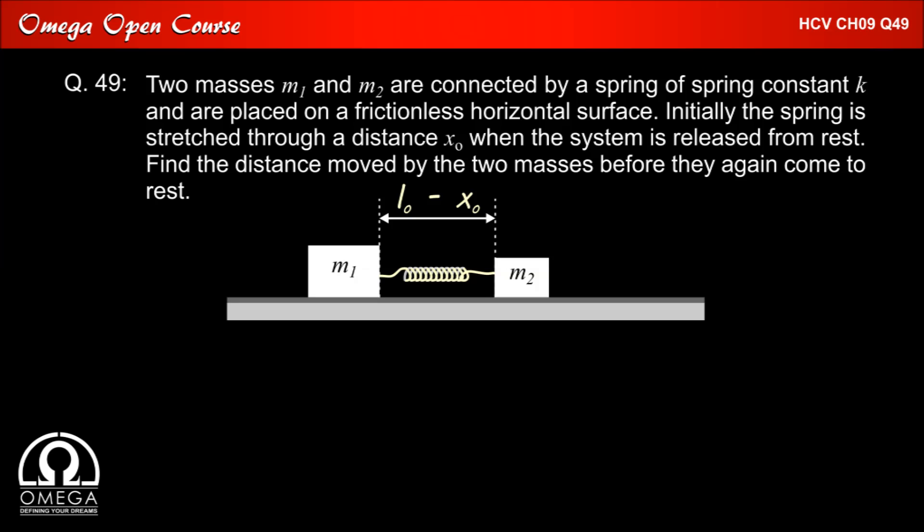So the final length of the spring will become L0 minus x0, which means the total distance traveled by both the blocks is 2x0. Now let us assume that M1 travels by x1 and M2 travels by x2. As we have seen, when center of mass is fixed, the product of mass and displacement of both objects must be equal. Therefore, M1 x1 equals M2 x2.